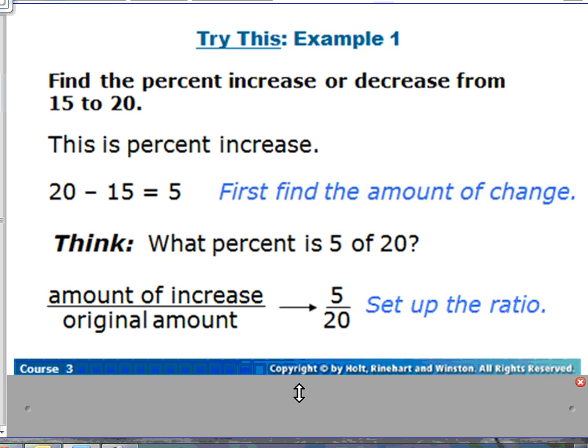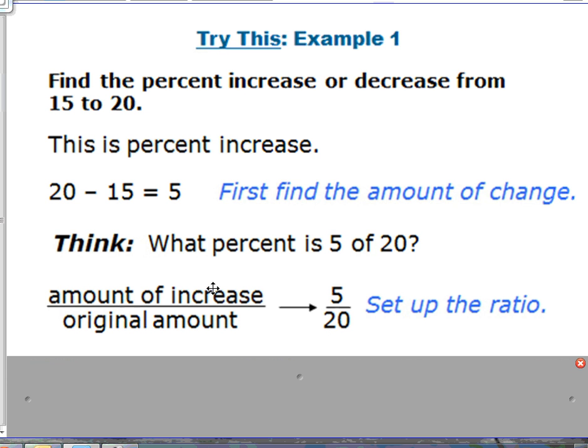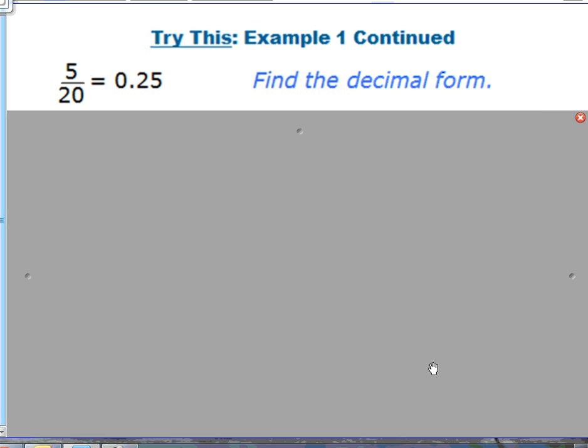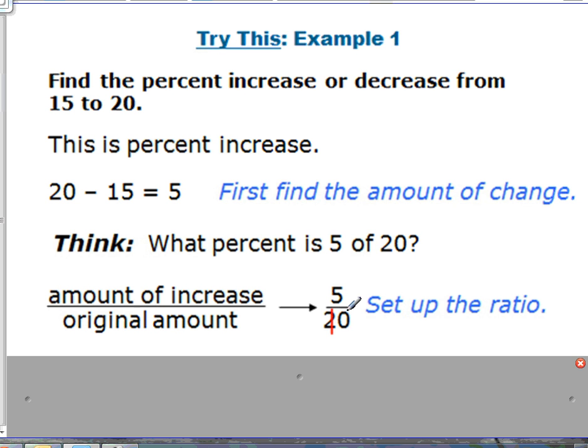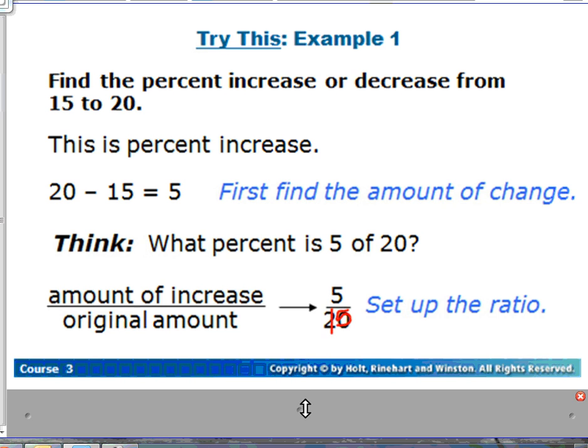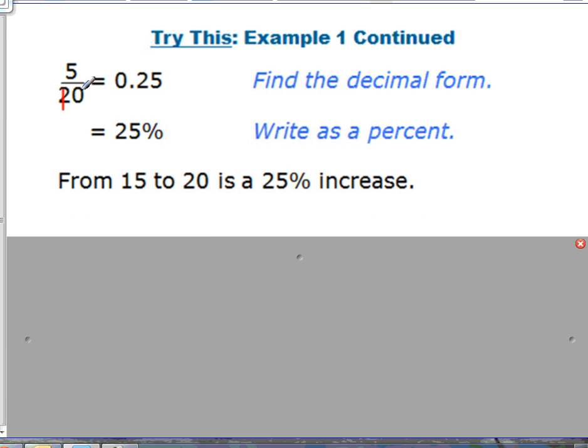Then we have to think what percent is five of twenty. Put five over twenty because it's the amount of increase, five over the original amount which is twenty. Actually you know what, we did make a mistake. This should be fifteen. So actually our ratio for five over fifteen should not be twenty five percent. If we have five over fifteen we have one third which is about point three repeating. So instead of a twenty five percent increase it's a thirty three percent increase from fifteen to twenty.